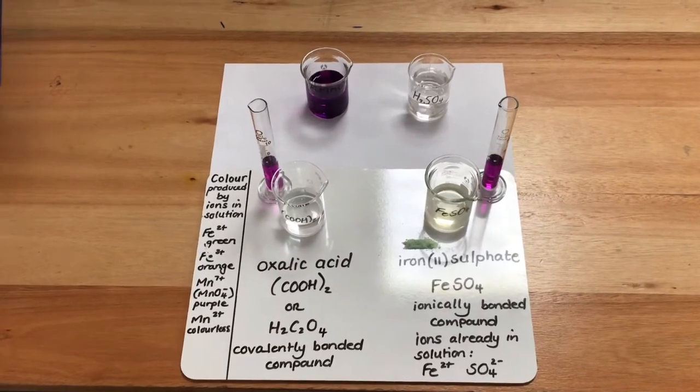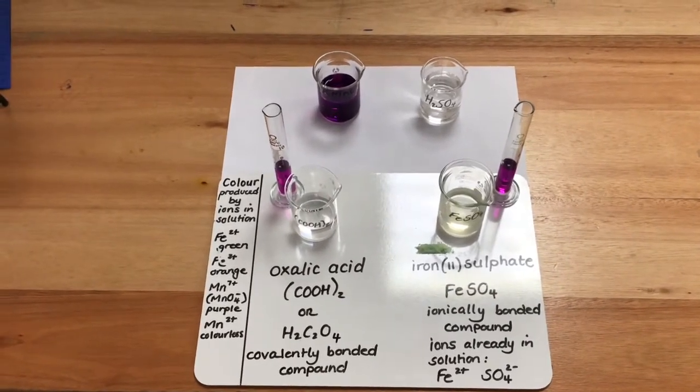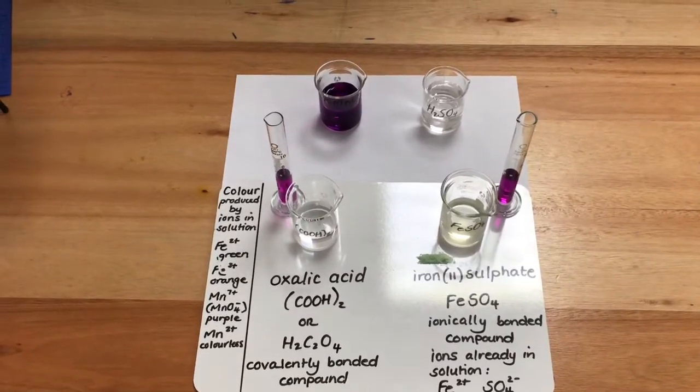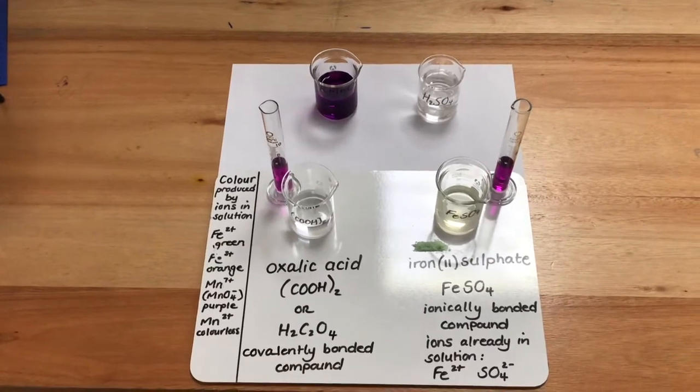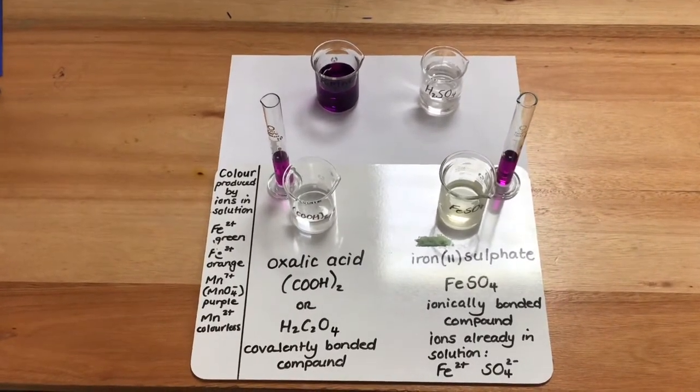In this experiment, we're going to investigate the effect of nature of reactants, or type of bonds, on the rate of a chemical reaction, and we're going to be using a qualitative approach.